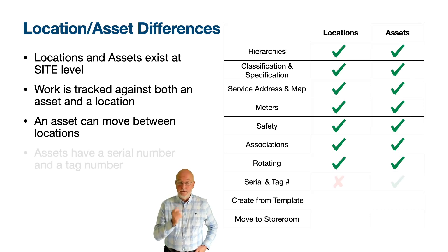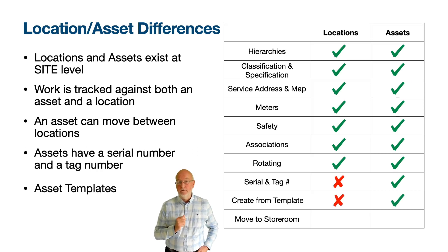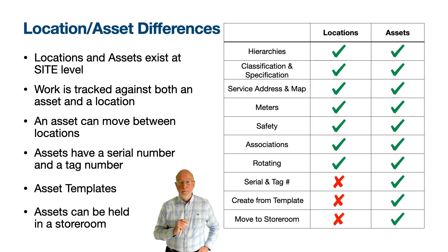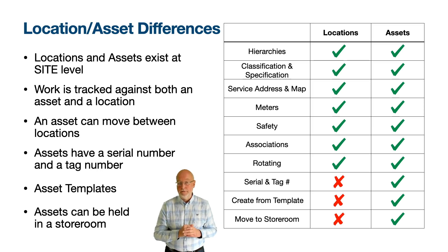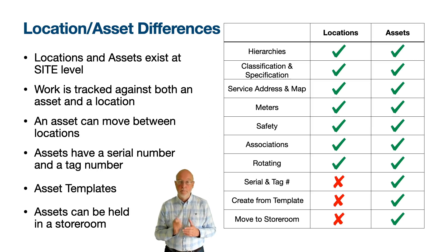In Maximo, assets have a serial number and a tag number and can be used for recording downtime — locations cannot. Assets can be generated or updated from an asset template, and they can be moved into a storeroom where there will be an inventory balance. When it is time for an asset to be repaired, assets at an operating location can be swapped with a store of assets. An asset can also be moved to a different site — and if the asset physically moves, like a boat sailing between islands, it can be repaired at a port on another island. In Maximo terminology, this is a repair location.